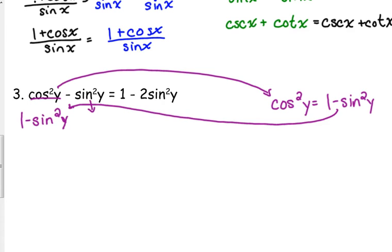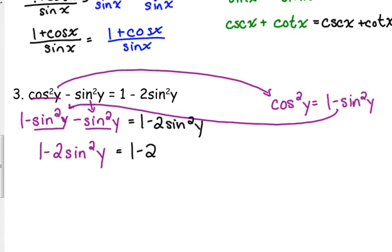And then I still had minus sine squared in my problem. And all I have to do now is combine those like terms right there on the left side. I have two minus sine squared. So we're done. One substitution, one step of simplifying, we're finished.